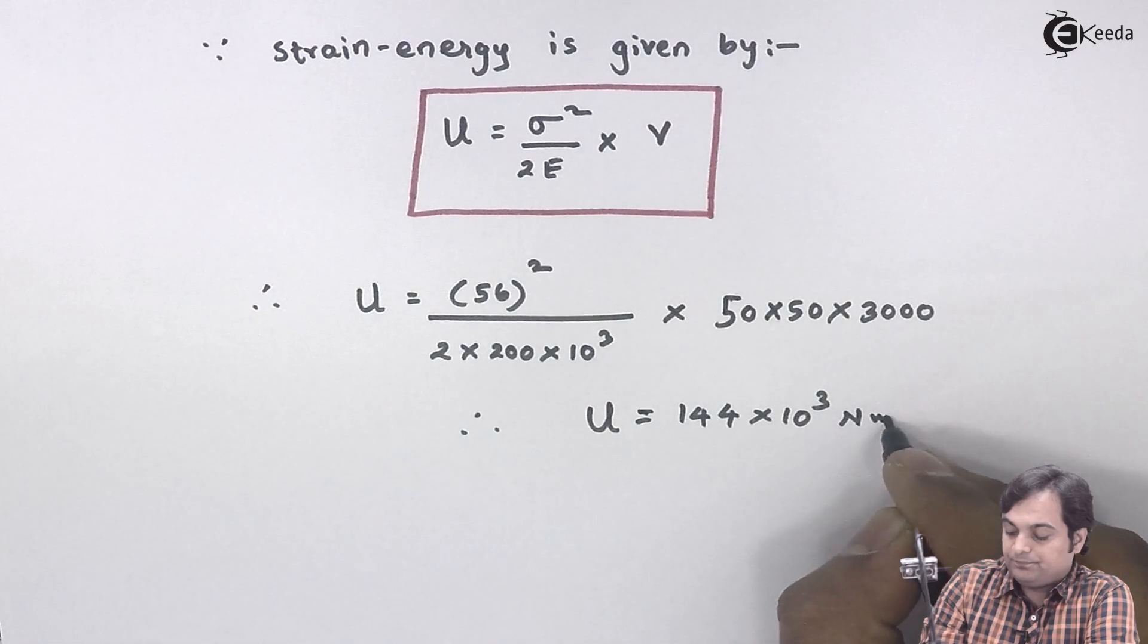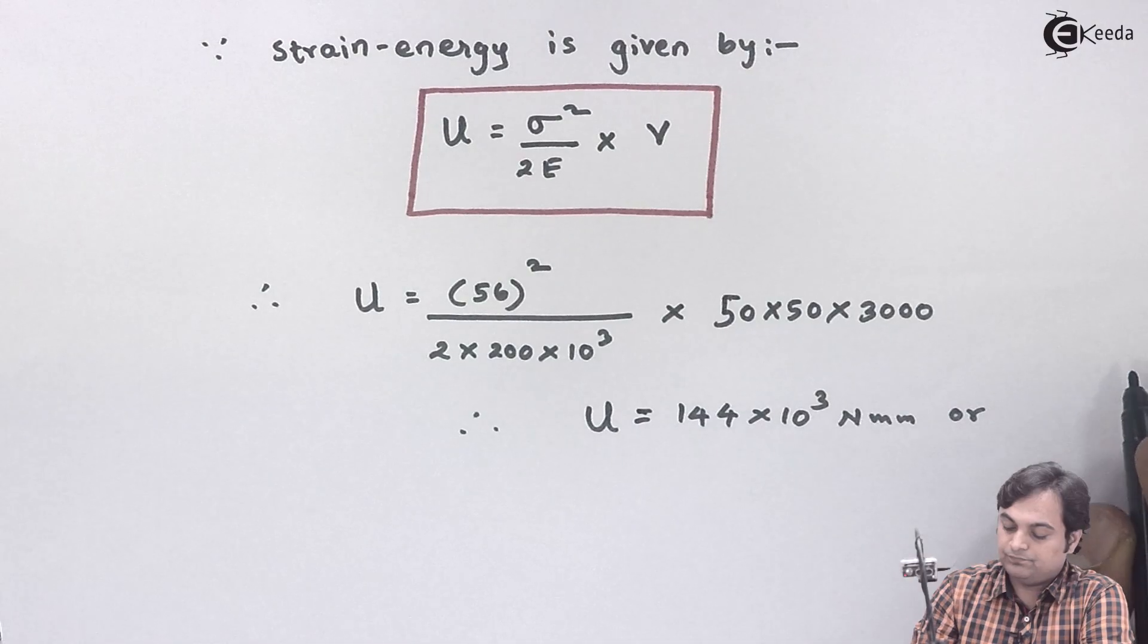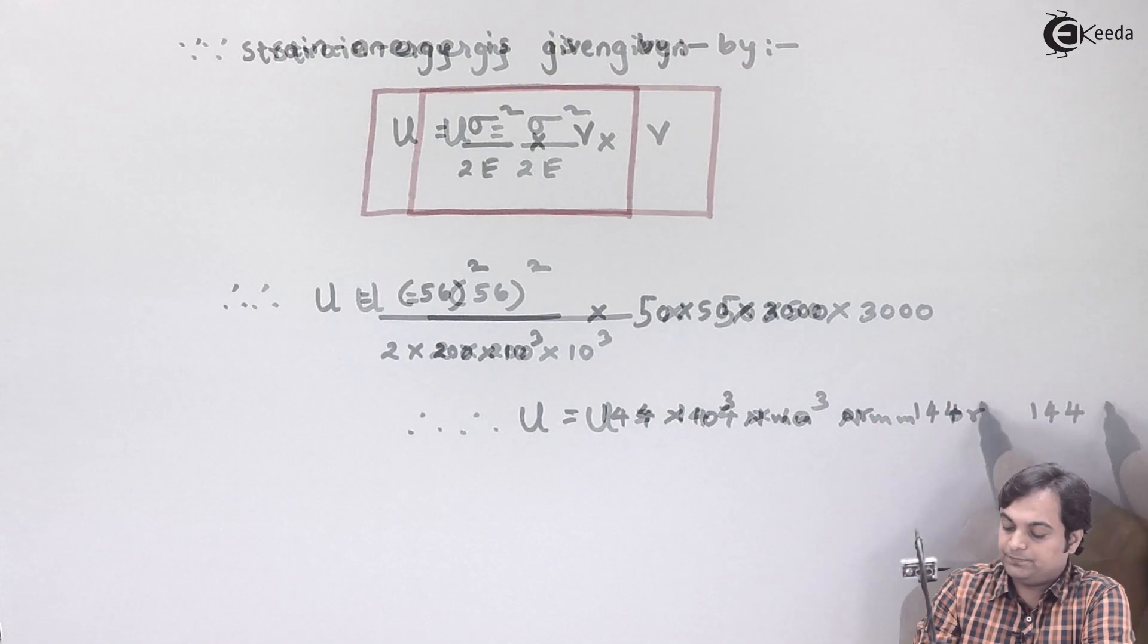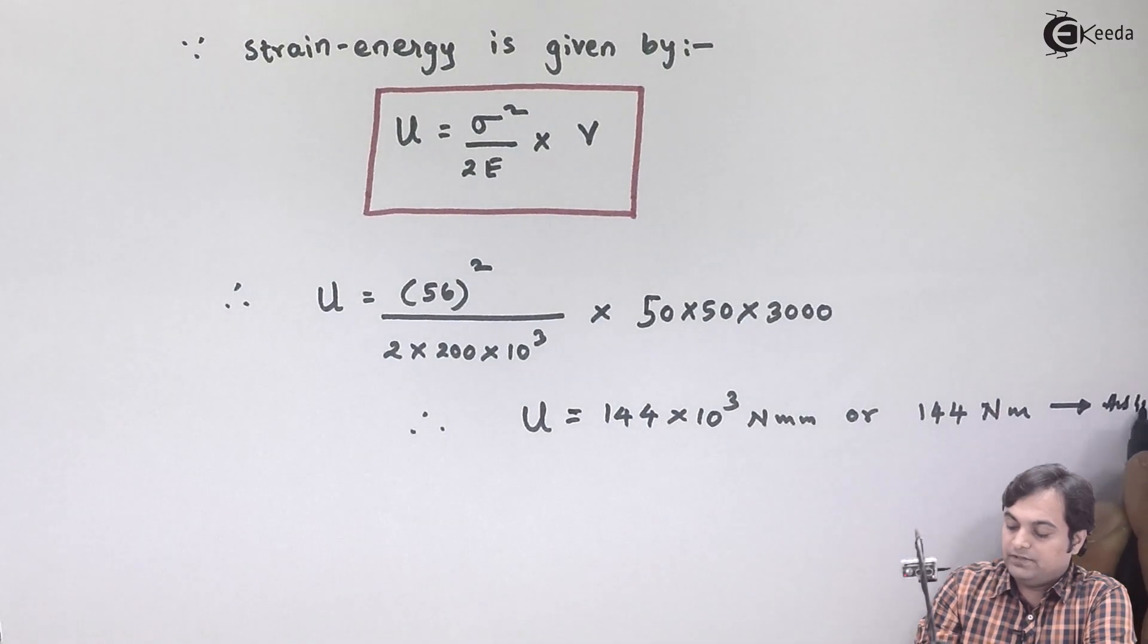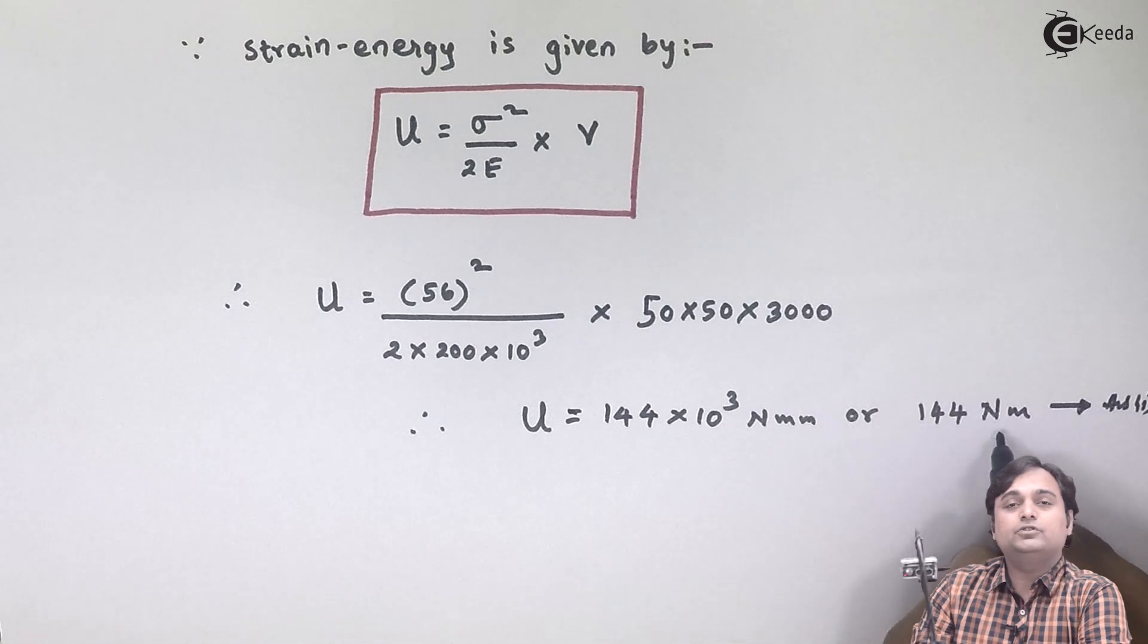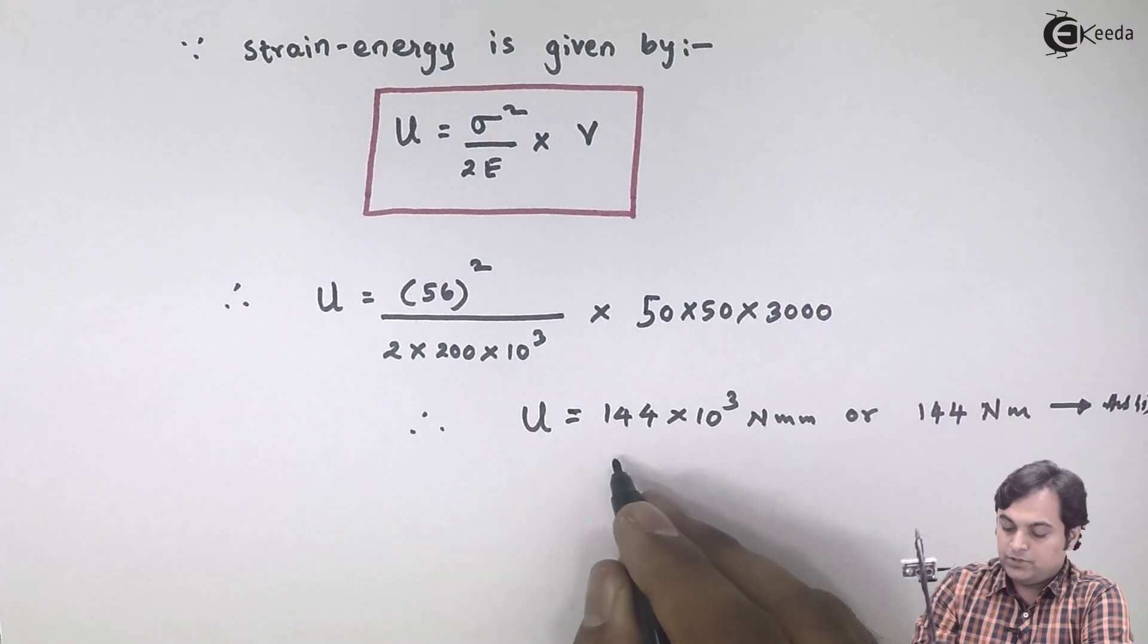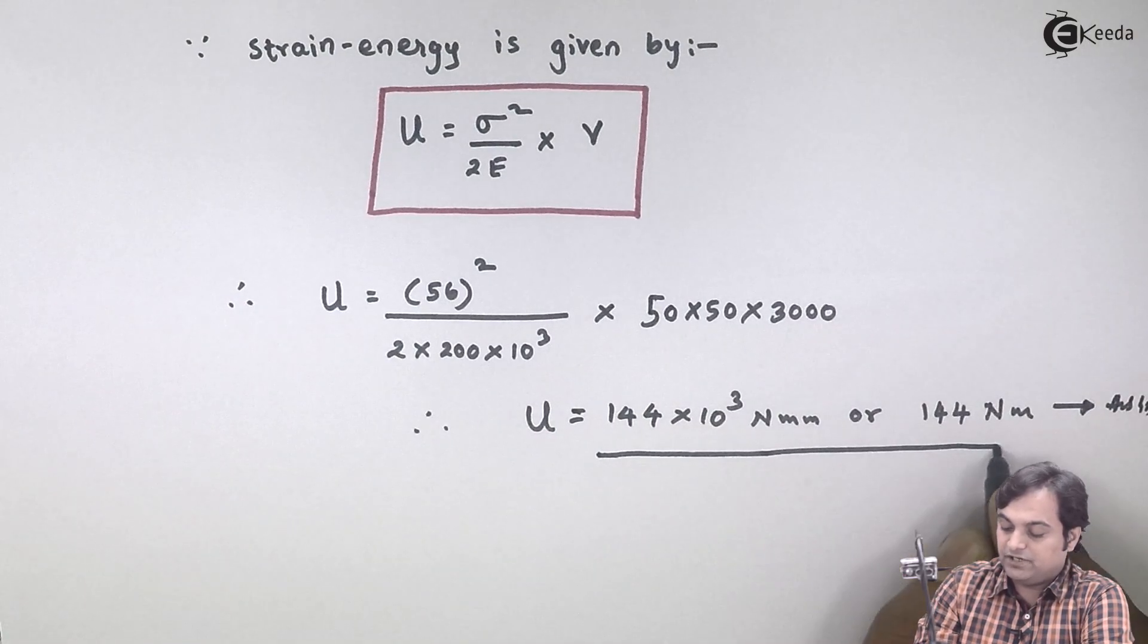Or we can say that it is 144 Newton-meters. And this Newton-meter can also be called as Joule, because energy can also be given in the form of Joule or kilojoule. So this is the final answer of strain energy.